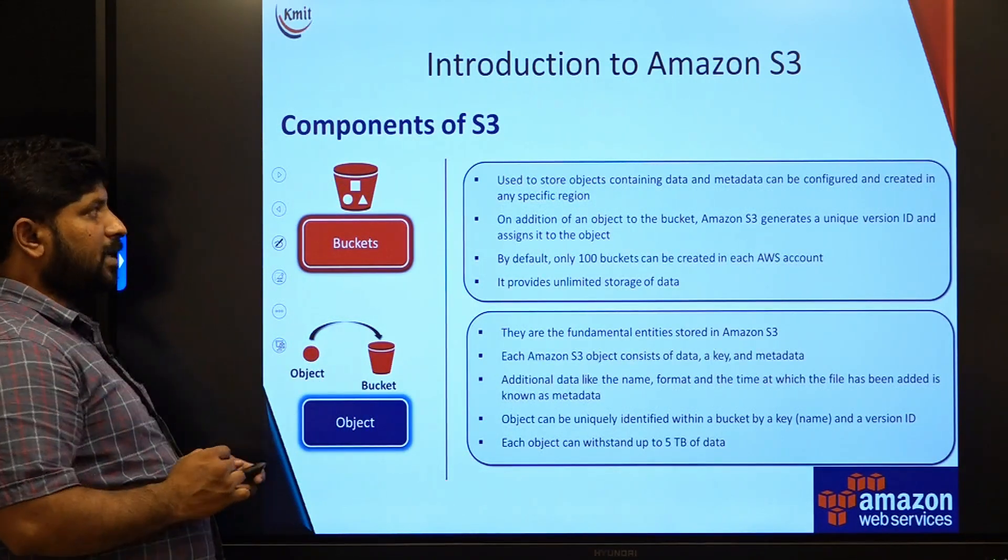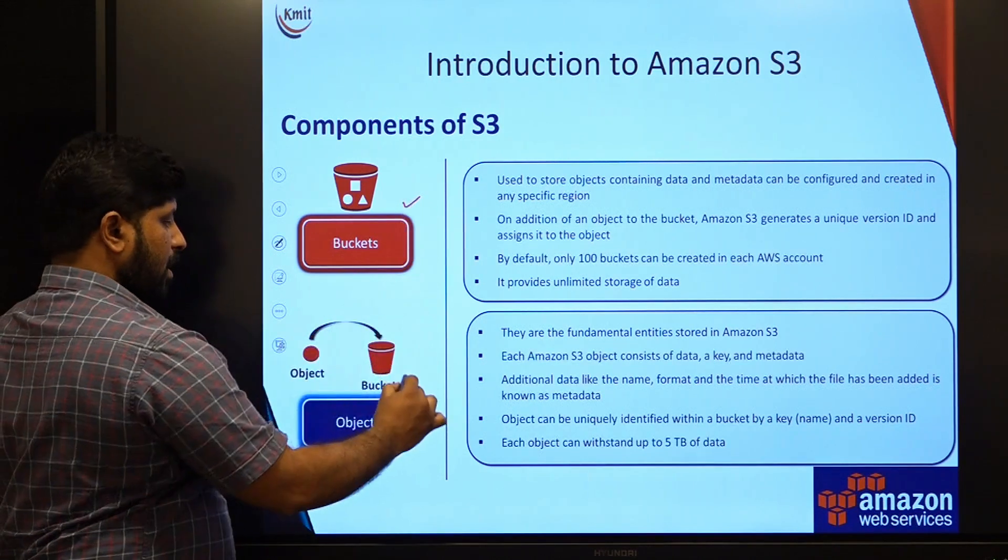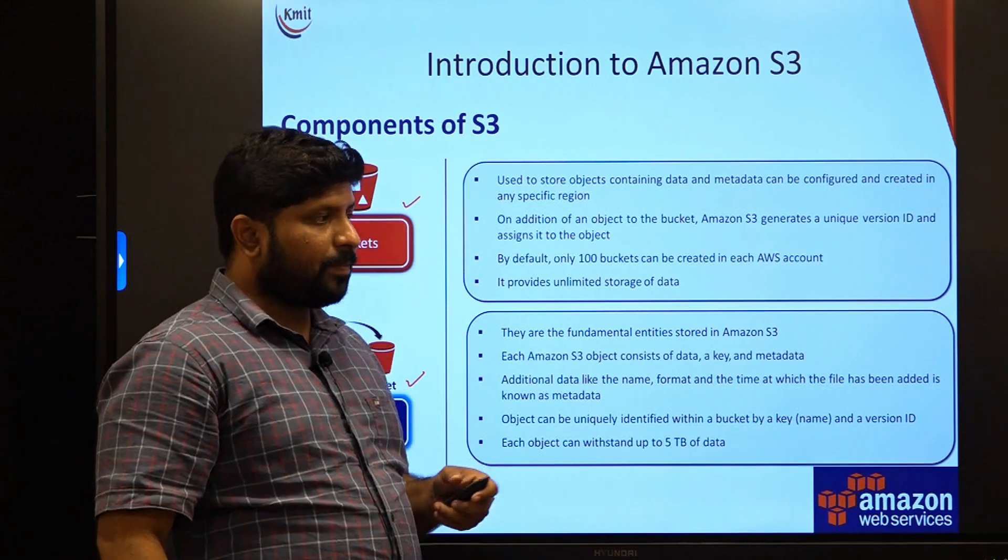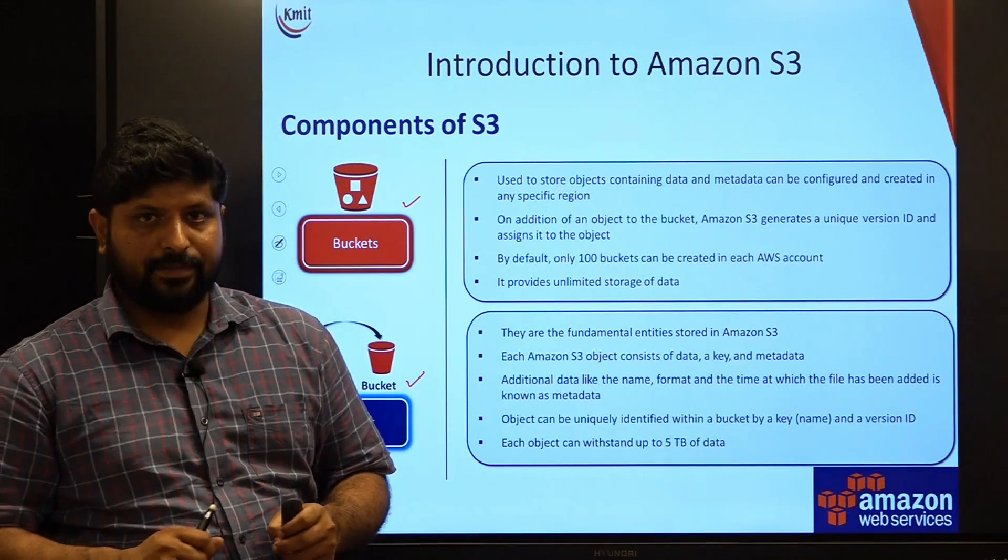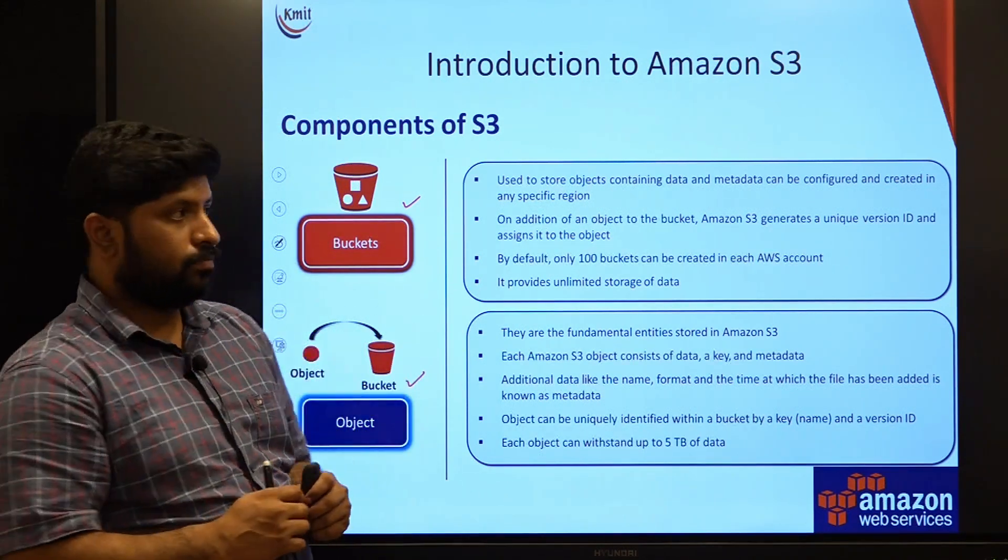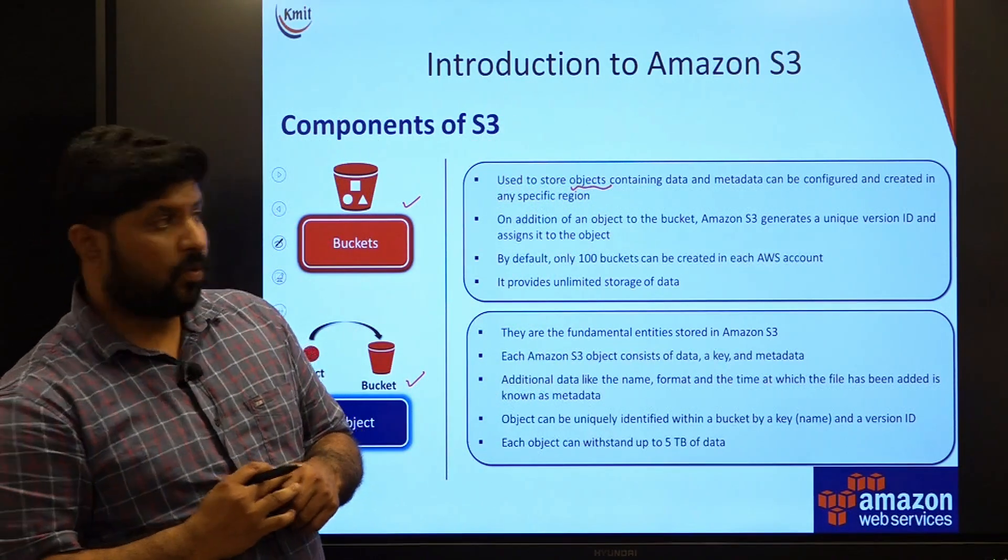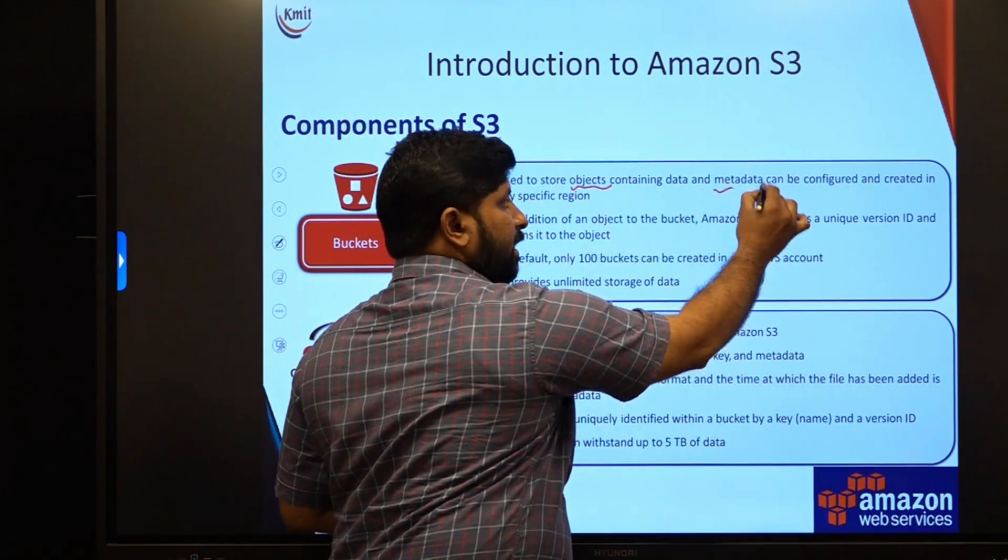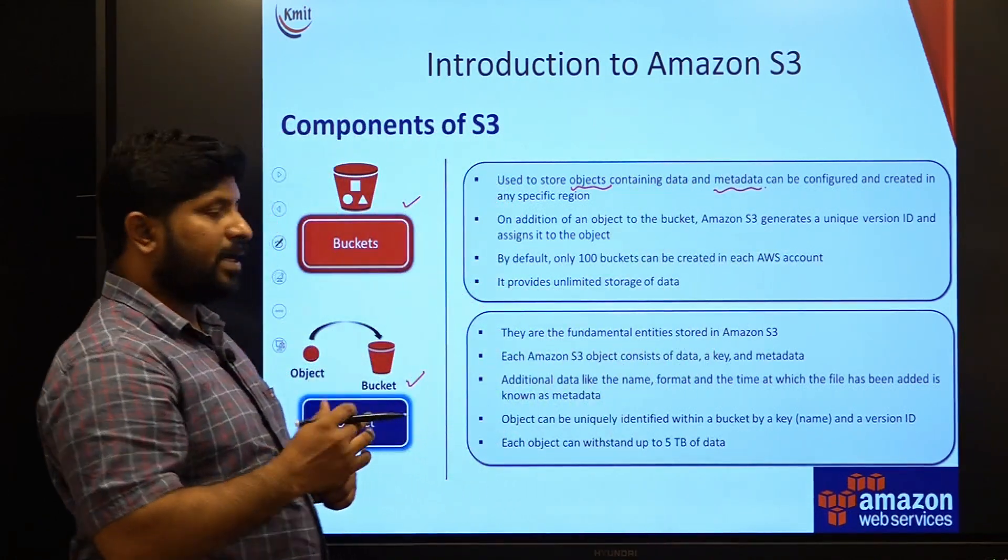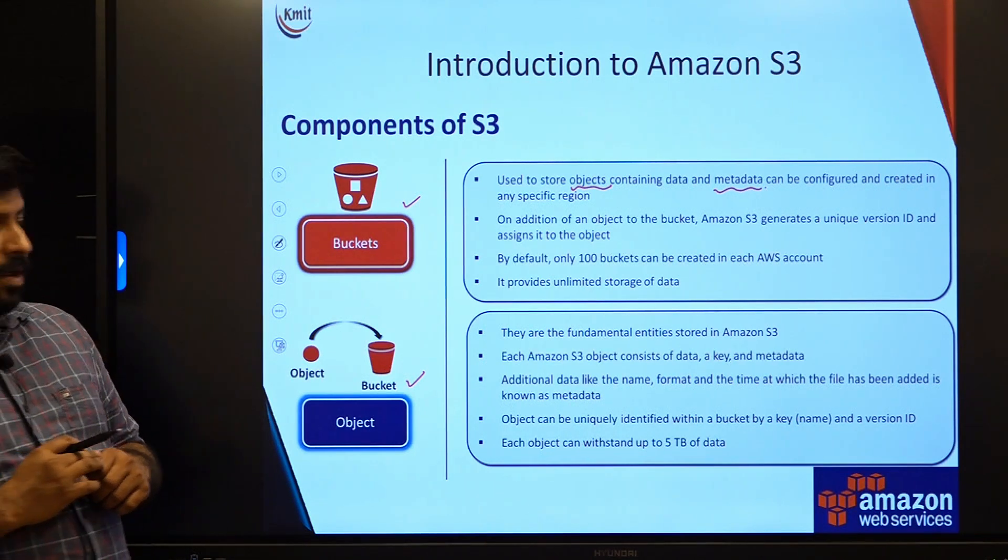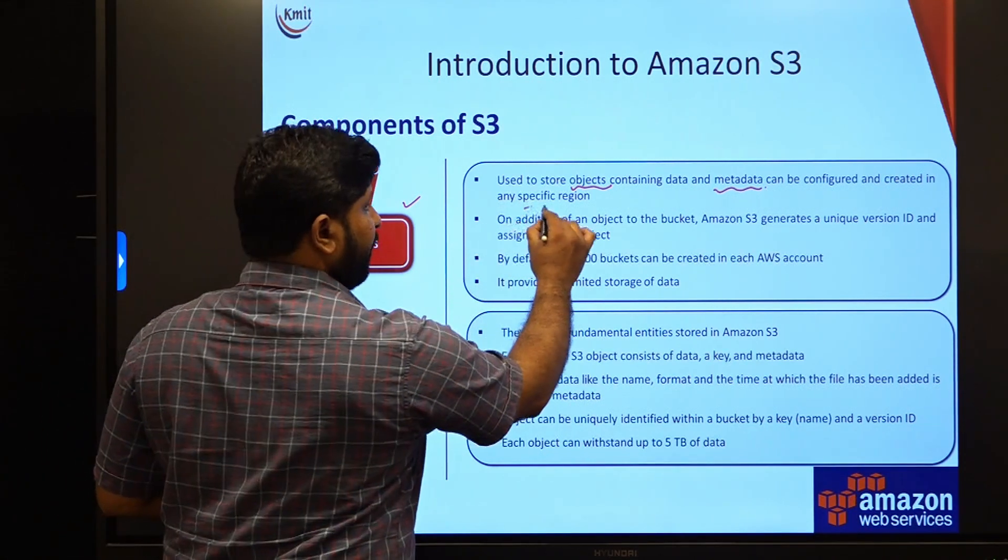Major components of S3 are buckets and objects. To be specific, what is a bucket? Bucket is a repository which can hold the objects, which can store objects. What does the object have? The object has the metadata. When it has been created? In which region it has been created? Basically, buckets are specific to the region.